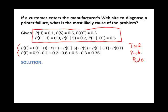So the last part of the problem — what we're actually trying to find: if a customer does indeed have a printer failure, what's the most likely cause? Was it software, hardware, or other? This is Bayes' theorem, because I'm finding a conditional — specifically the reverse conditional of the ones I was given. I'm trying to find the probability of which problem occurred given I had a printer failure. So I'm conditioning on failure, whereas above I was conditioning on hardware, software, or other.